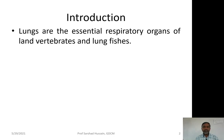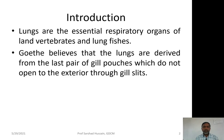Euth was a scientist who believed that lungs are derived from the last pair of gill pouches which do not open to the exterior through gill slits. He proposed this in the context of the evolution of lungs. As we move from lower vertebrates to higher vertebrates, the number of gill slits was reducing.